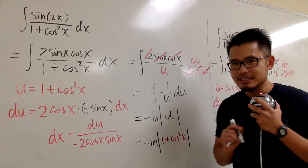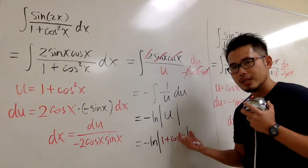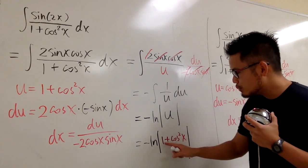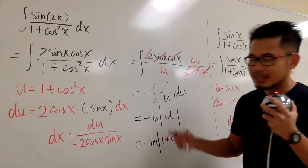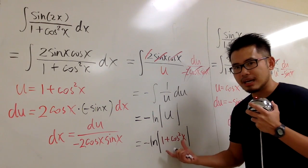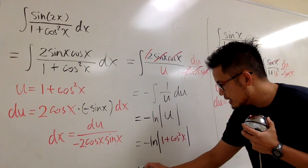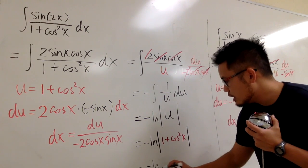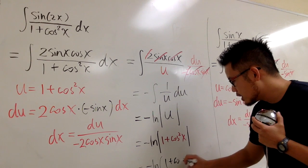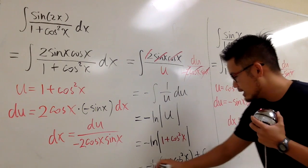Bringing u back, we have negative ln of the absolute value of 1 plus cosine squared x. Notice that cosine squared x is always positive — anything squared is positive — and adding 1 keeps it positive. Since the inside of the ln is always positive, we don't need the absolute value. The final answer is negative ln of (1 plus cosine squared x) plus C.